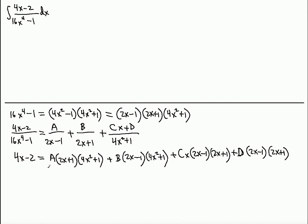Let's start collecting terms by power. For x³: the left side has 0, and we get 8A from A's expansion, plus 8B from B's expansion, plus 4C from the Cx term. For x²: the left side is also 0, and from A we get 4A·x², from B we get -4B·x².